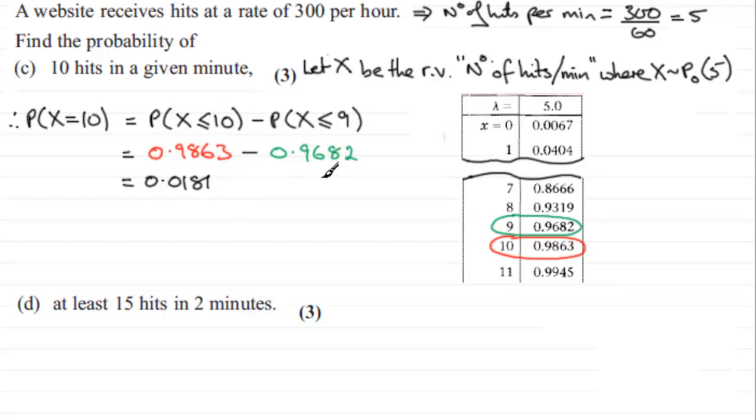Now I did say there was two ways that we could do this. The other way to work out the probability X equals 10, let's just put or here, is to go through the formula. By that I mean that you should remember that if X is distributed as a Poisson distribution with a mean of lambda, then the probability that X equals R is equal to lambda to the power R, E to the minus lambda, all divided by R factorial.